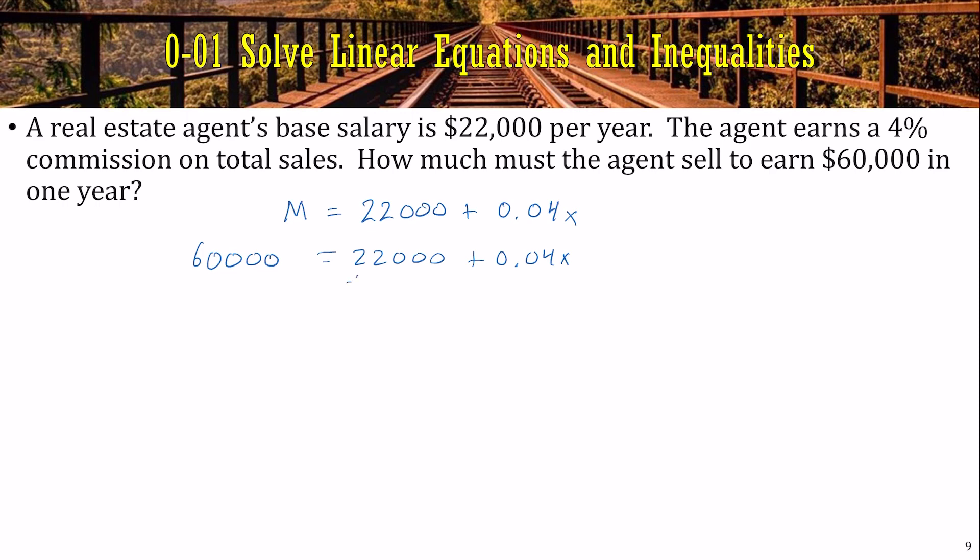Farthest from the X is the $22,000, so we'll subtract that. That gives us $38,000. Then we need to divide by the 0.04, the 4%. Since that was times by the X, we're dividing by that to make it go away. And $38,000 divided by 0.04 is 950,000.